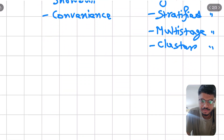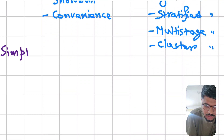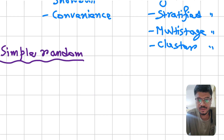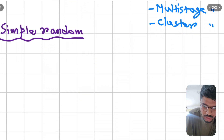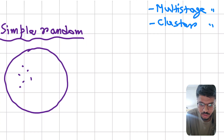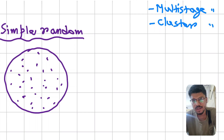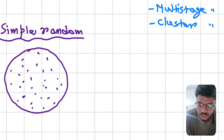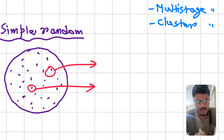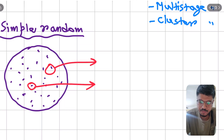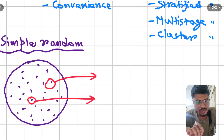First, simple random sampling. Suppose this is your population and these are the units. In simple random sampling, any unit can be randomly selected. You can randomly select any unit for sampling — there is no restriction on which unit is chosen.